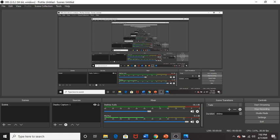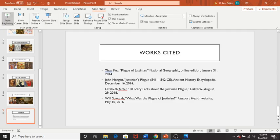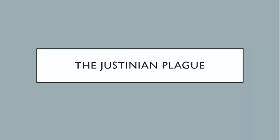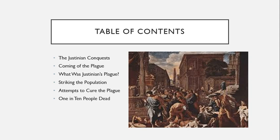Welcome to the newest episode in an ongoing Legendarium series about the plagues that have struck and shaped humanity. In this installment, the Justinian Plague, we will talk about how Emperor Justinian's plans to restore the Roman Empire to its former glory were sundered by the plague which would one day bear his name. By the time it made its way through Africa, Europe, and Asia, almost one-tenth of the human population of the time had died.